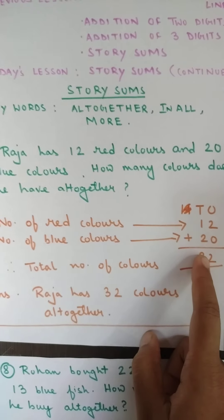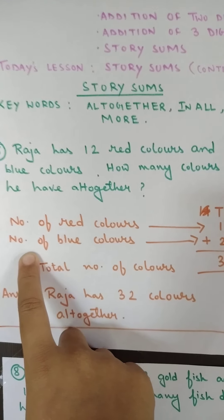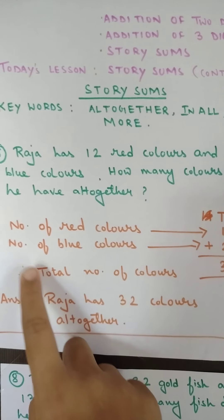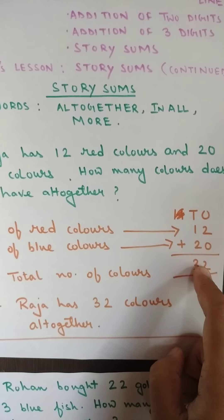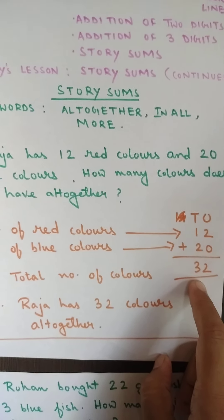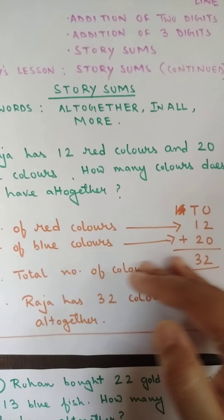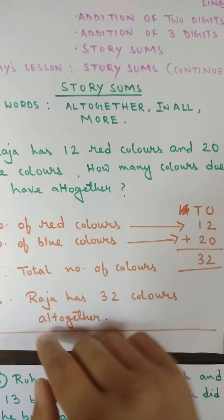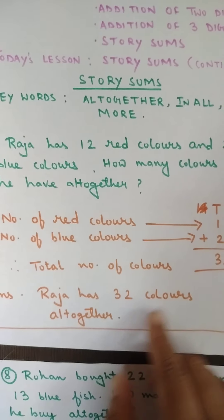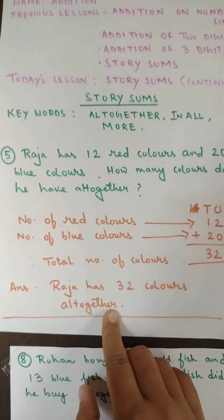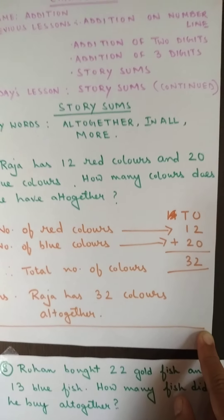Number of blue colors is 20. The two dots and one dot on top — this is called 'therefore'. Therefore, total number of colors — you have to add and write the total, which is 32. After you finish, leave one line and write: Raja has 32 colors altogether. Then draw one ending line.